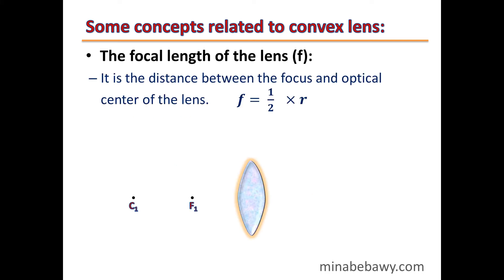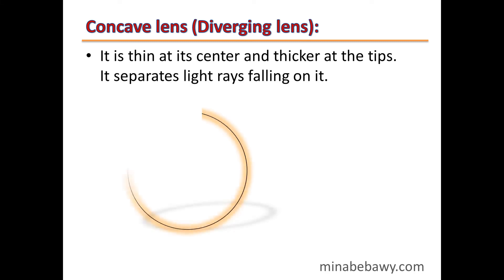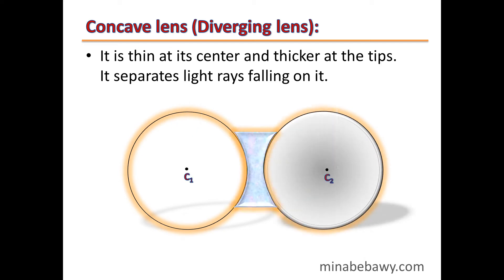The focal length of the lens is the distance between the focus and the optical center of the lens, and the focal length is half the radius. The concave lens, also called a diverging lens, is thin at its center and thicker at the tips, and it separates the light rays falling on it.